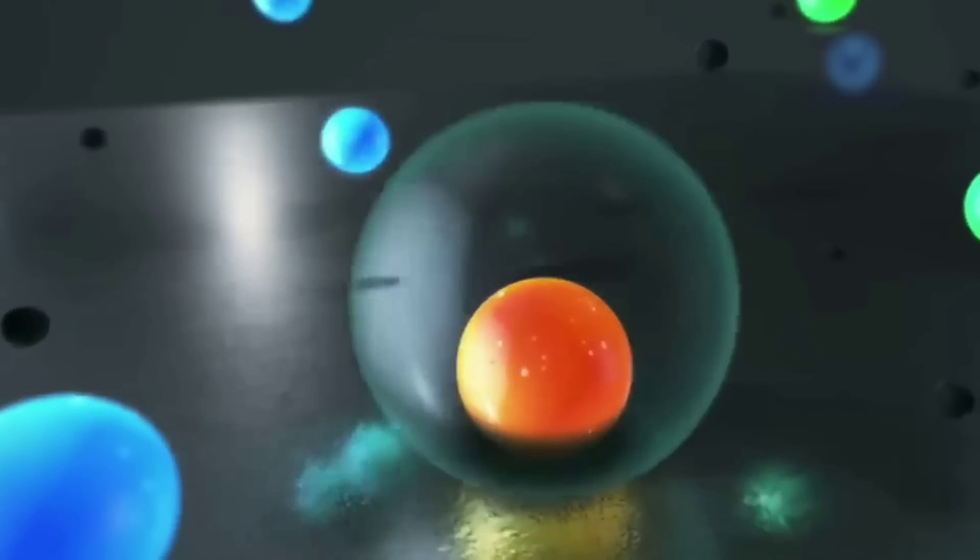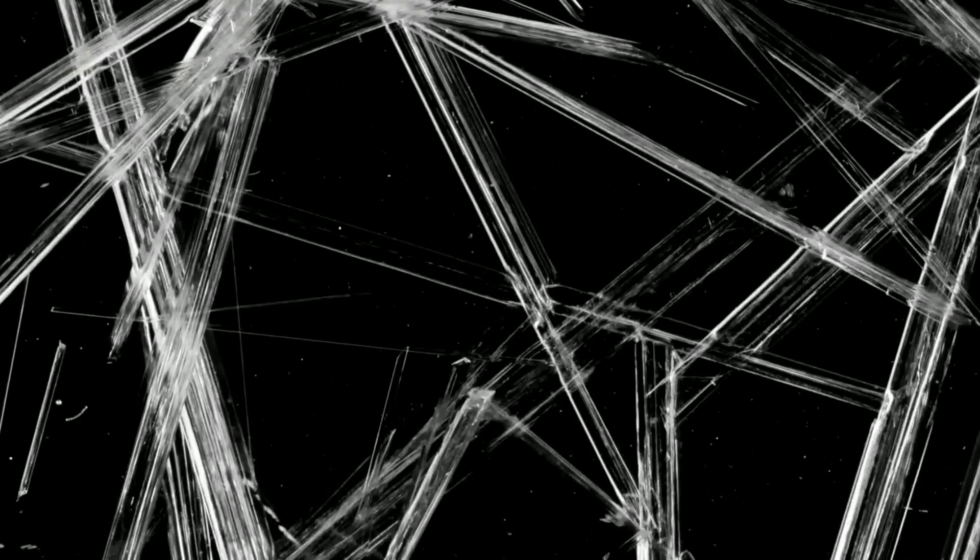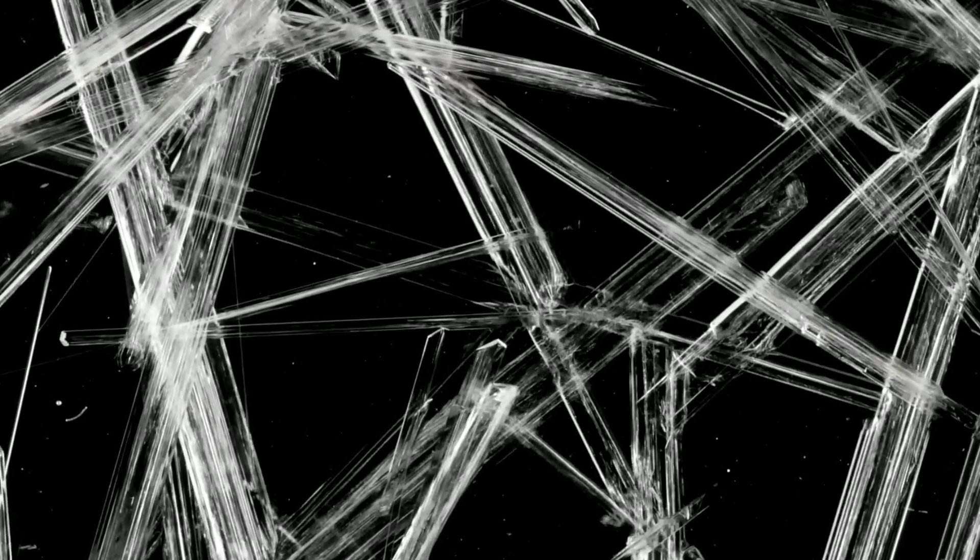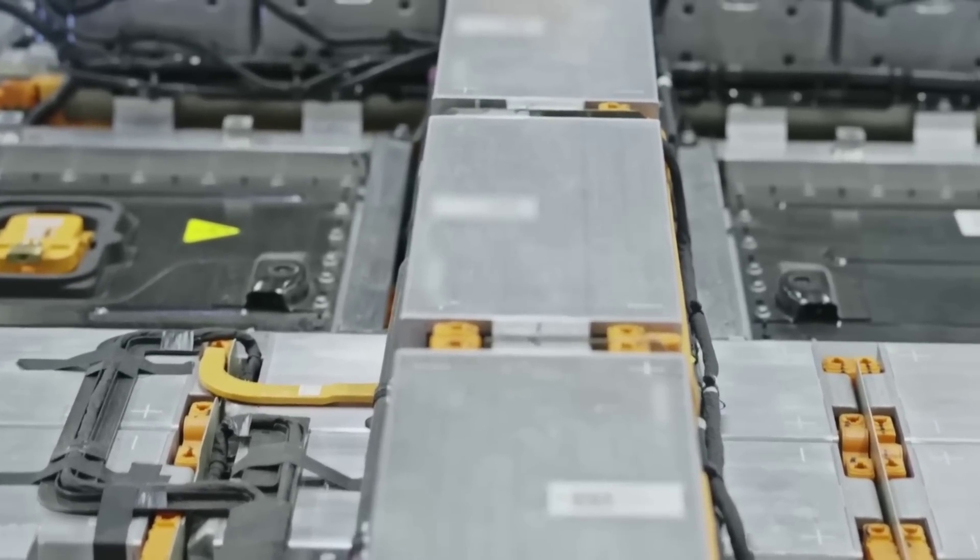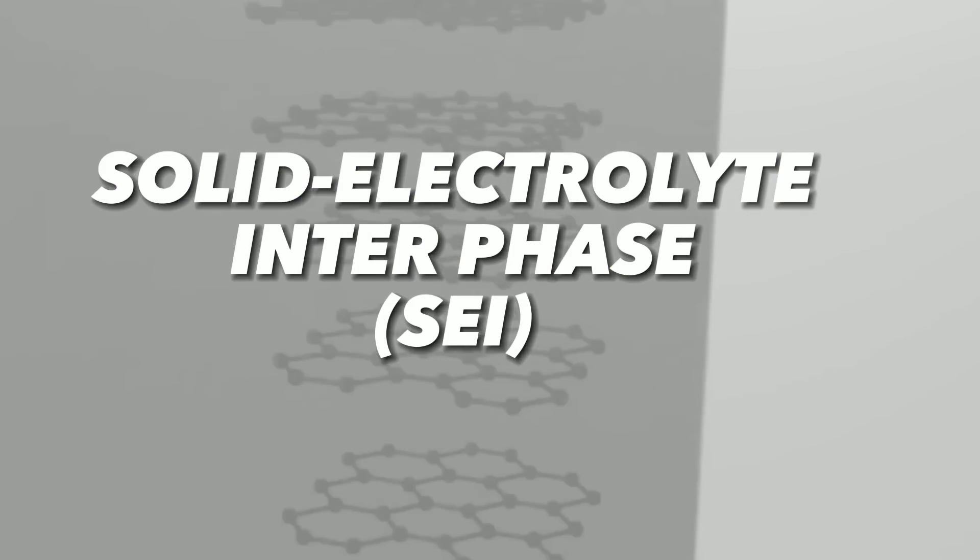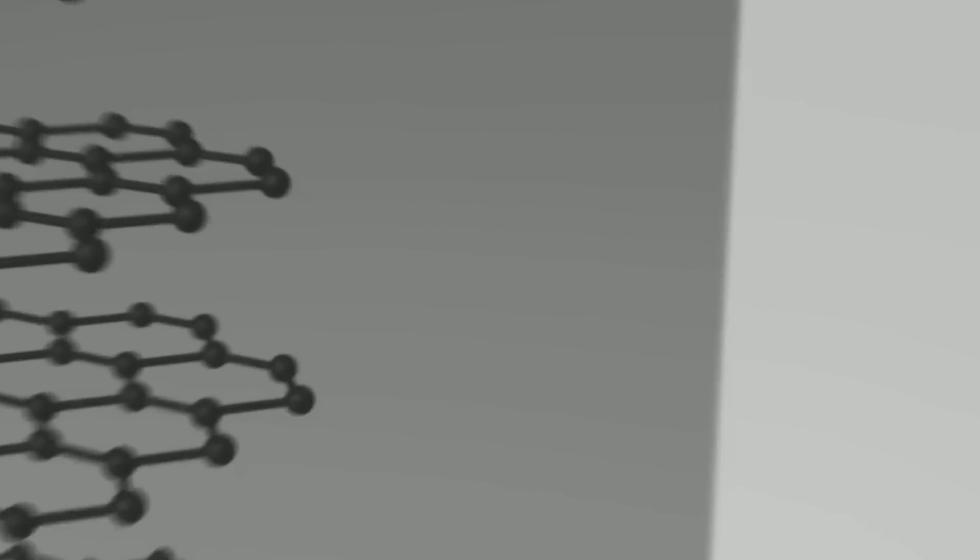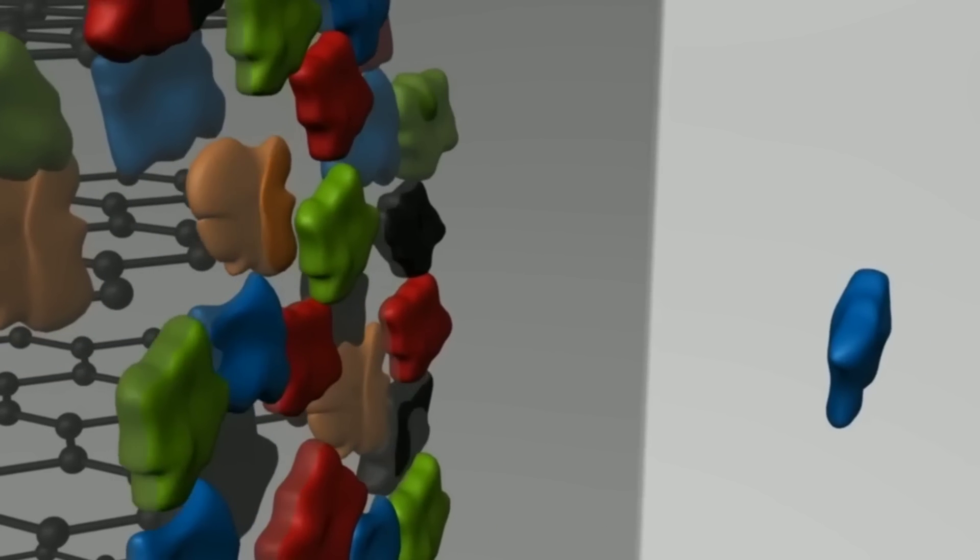However, silicon also has some drawbacks. One of them is that silicon expands and contracts significantly when it absorbs and releases lithium ions. This causes mechanical stress and cracking of the silicon particles, which leads to capacity loss and poor cycling stability of the battery. Another drawback is that silicon reacts with the electrolyte and forms a solid electrolyte interface (SEI) layer on its surface, which consumes some of the lithium ions and reduces the efficiency of the battery.